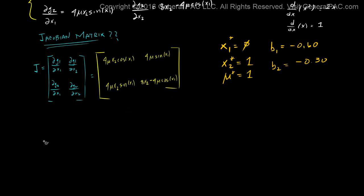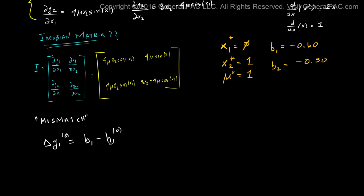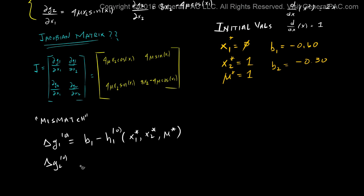The next step is to find our initial mismatches. We won't go over what these terms mean just yet — we'll first introduce the hand calculation part to get an overall understanding of how the process works and then go into more detail later. The mismatch delta G1 at the 0th iteration equals b1 minus h1 at the 0th iteration, fed with our initial values. Similarly, delta G2 at the 0th iteration equals b2 minus h2 at the 0th iteration.